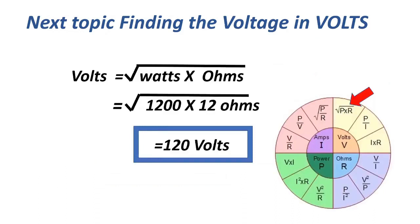The next formula: volts equals the square root of watts times ohms. That equals the square root of 1,200 times 12 ohms, which equals 120 volts.